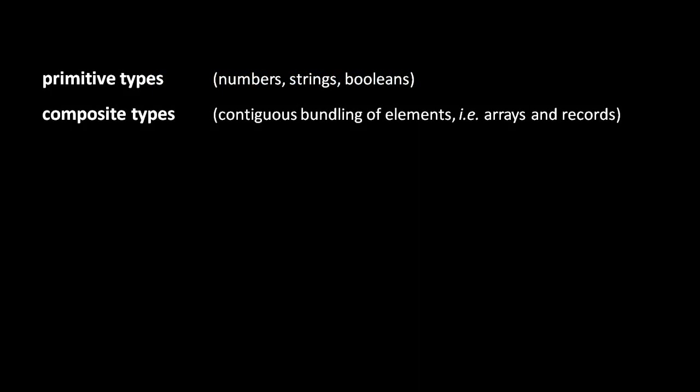When we talk about data types, we can make a distinction between primitive types and composite types. Primitive types are atomistic pieces of data, like individual numbers or strings or booleans. A composite type, in contrast, is a bundling of these elements together in a contiguous fashion, meaning that they're all placed next to each other in memory.